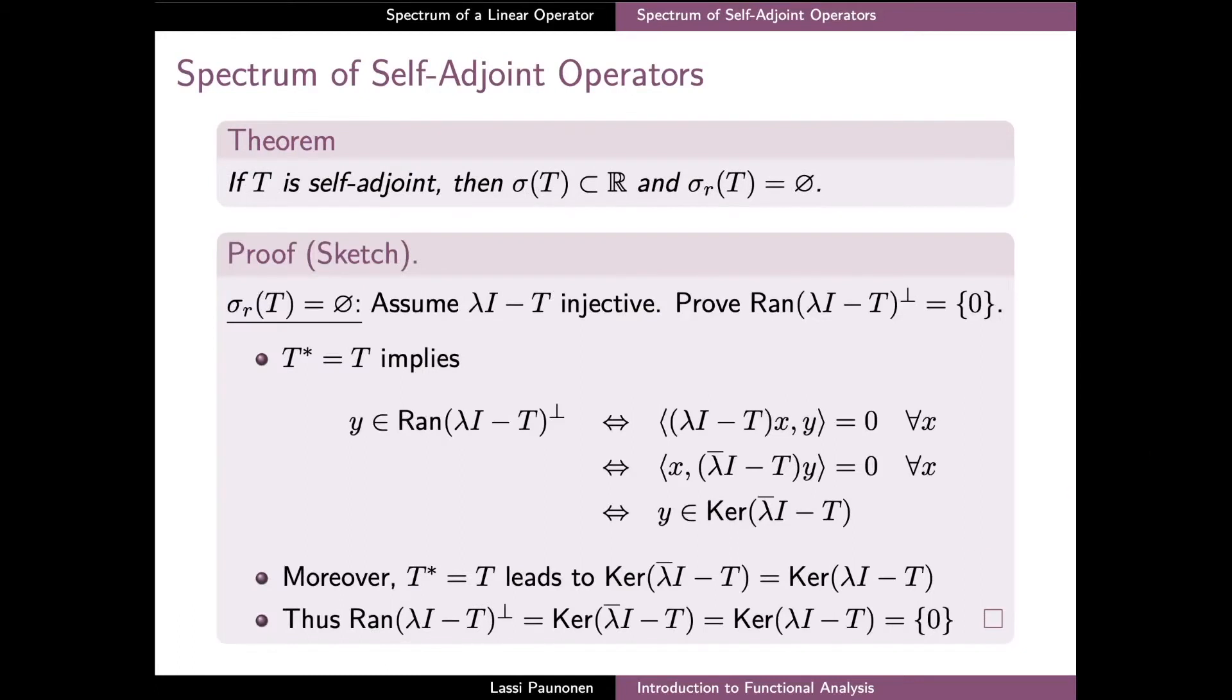We can now sketch the proof of this result. We begin by outlining how to deduce that T cannot have any residual spectrum. To do this, it is sufficient to show that for any λ,